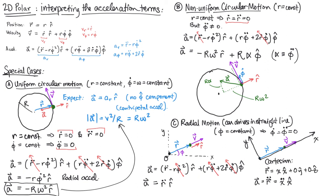So by now we've introduced polar coordinates and derived the expression for position, velocity, and acceleration. In this video we gave intuition for each of the sub-terms in the acceleration. The one term we didn't cover is the term involving r dot and phi dot — it turns out that's the so-called Coriolis term, which we'll potentially get to in the future, but we don't need that piece at this moment. Until next time, take care and be well.